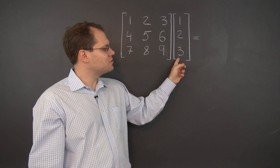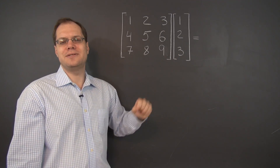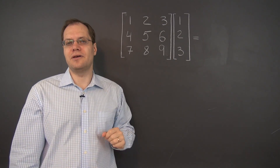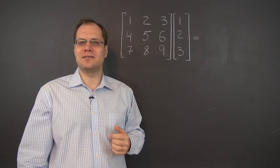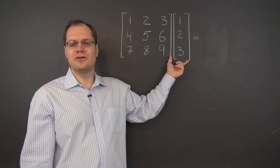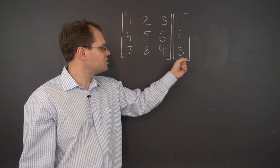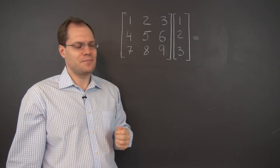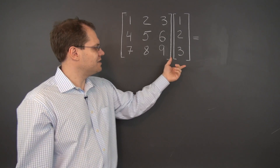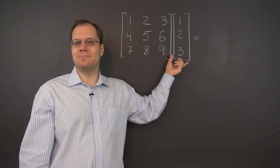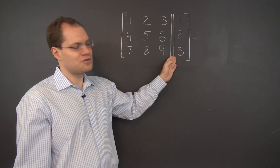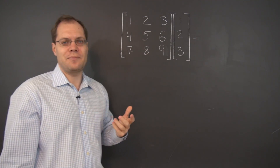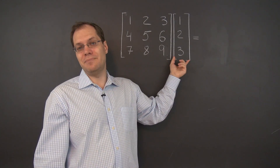When you're looking at a 3x1 matrix, you may be tempted to call it a vector because it is indeed a vector in R3. But in the context of matrix multiplication, I think it's better to call it a matrix, just to keep the parity between the two elements in this product. Occasionally the word 'vector' might slip in because when I look at a 3x1 matrix, I immediately think of a vector in R3 — so I may say 'vector' but I really mean 'matrix'.